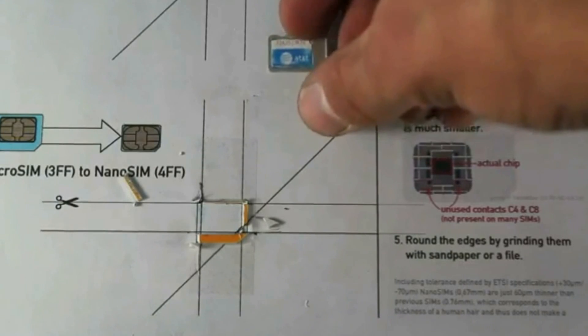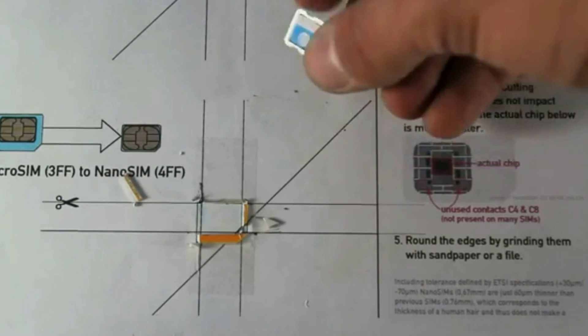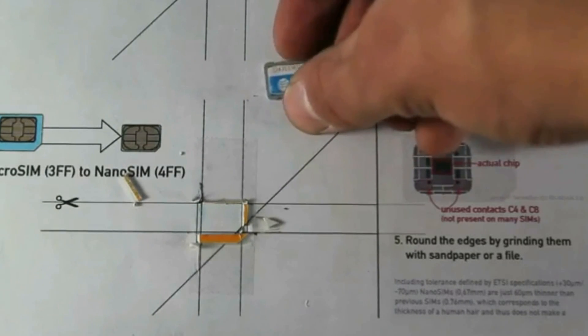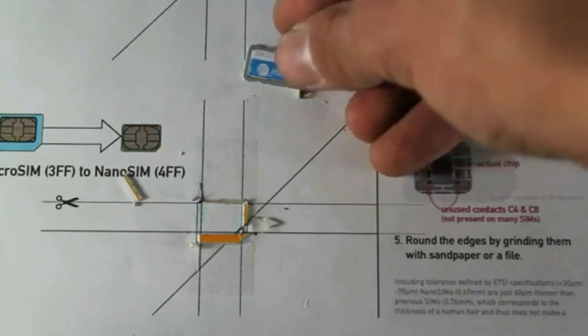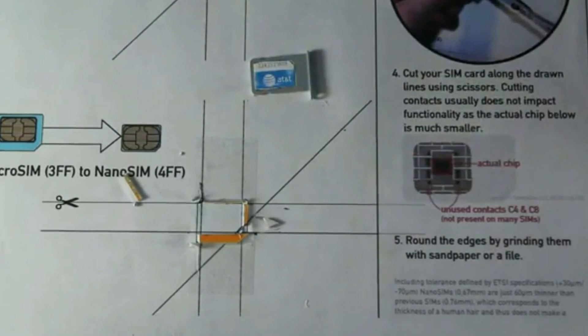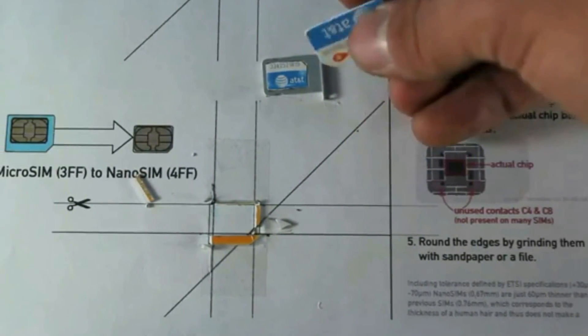Your edges may be jagged, so you can use a bit of sandpaper to smooth them out—I never found that necessary. Also, you may have heard that the new nano SIM card is 15% thinner than old SIM cards, but you don't need to worry about that. It still fits perfectly in the iPhone 5 without ever getting stuck.